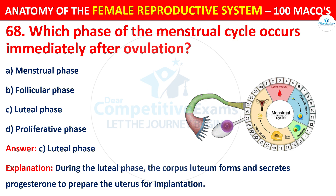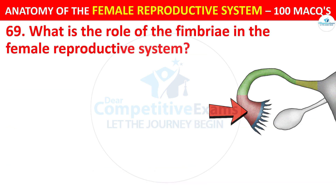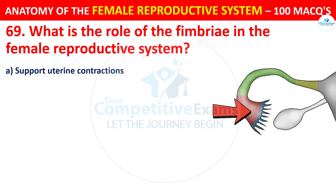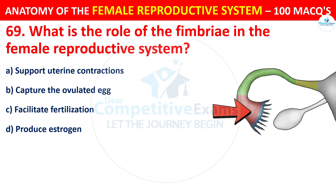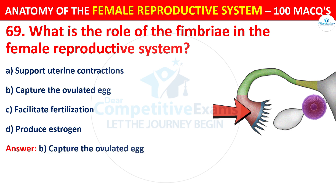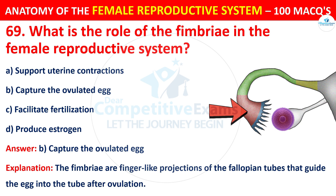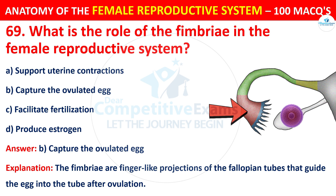Question number 69. What is the role of the fimbriae in the female reproductive system? The correct answer is B — to capture the ovulated egg. The fimbriae are finger-like projections of the fallopian tube that guide the egg into the tube after ovulation.